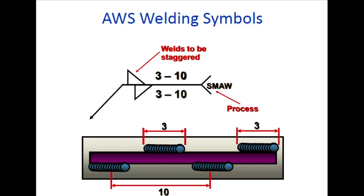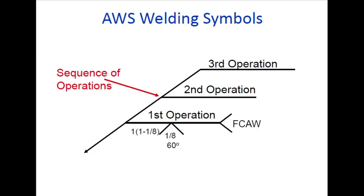You can mention the process here - SMAW if it is SMAW, GMAW if it is GMAW. Per the AWS sequence of operations, you can mention the sequence like this: first operation FCAW, if doing NCW, then FCAW; second operation could be another process such as SMAW.